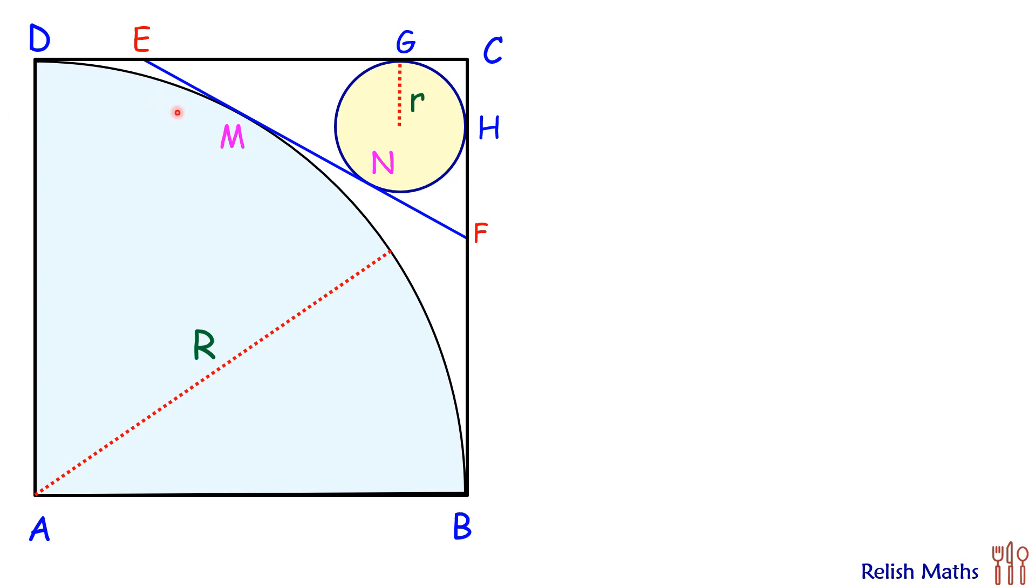EF we are dividing in three parts. EM we are taking it as x, then MN we are calling it y, and length NF we are calling it z.